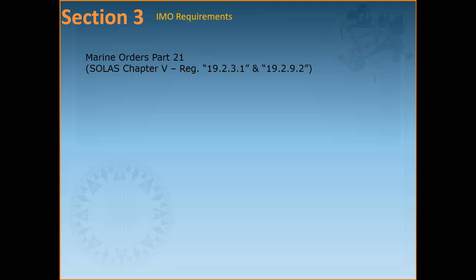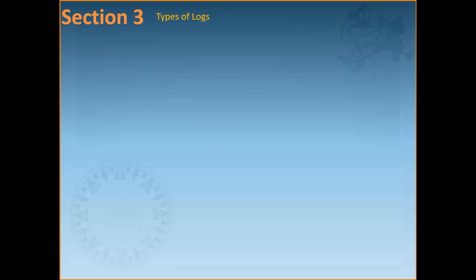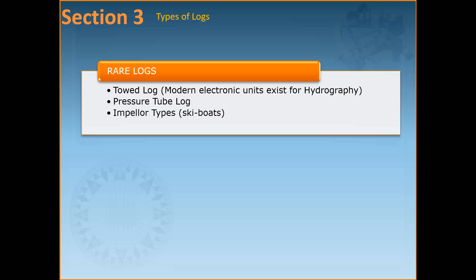Regarding regulations, as per marine orders and SOLAS, all ships more than 300 gross tonnage must be fitted with a log that measures speed through water (STW). All ships more than 50,000 gross tonnage must be fitted with a log that measures not only the forward and aft speed but also the athwartship speed and speed over the ground.